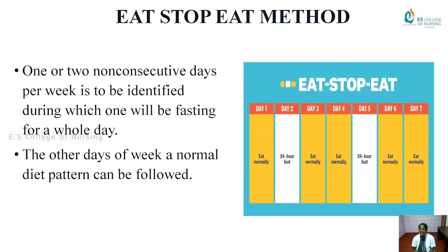The eat-stop-eat method: you can see from the picture that over 7 days, day 1 you eat normally, day 2 you fast for 24 hours, day 3 you return to a normal diet, day 4 is normal, day 5 is a 24-hour fast, and days 6 and 7 are normal diet. Similar to the Hindu tradition where people fast for a whole day for religious observance. One or two consistent days per week are identified during which one fasts for a whole day, and the other days a normal diet pattern is followed.